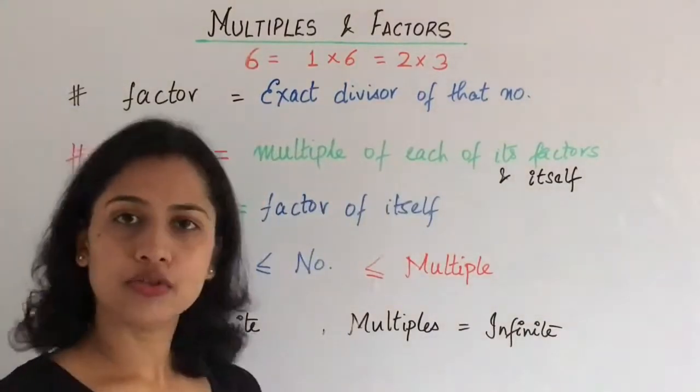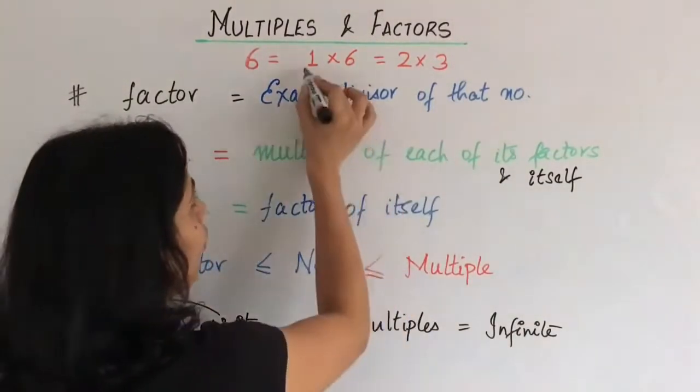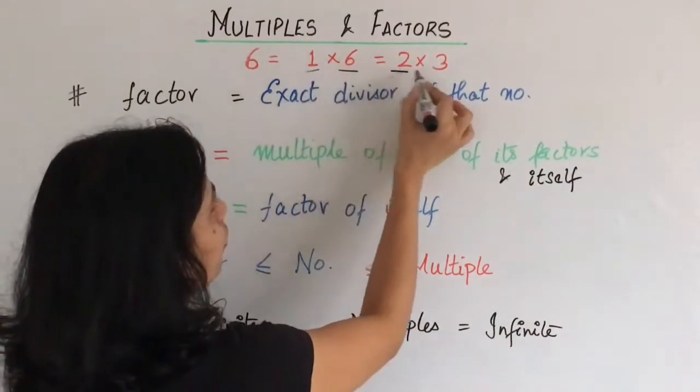6 ko hum likh sakti hai, 1 into 6 or 2 into 3. Toh iske factors kya huye? 1, 6, 2 and 3.